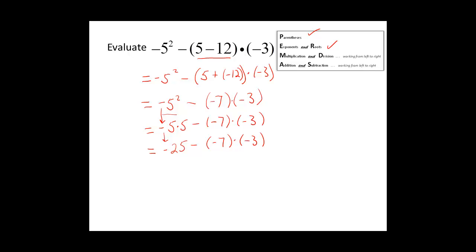Next we will do multiplication and division. Here is our multiplication part of this problem. Negative 7 times negative 3.